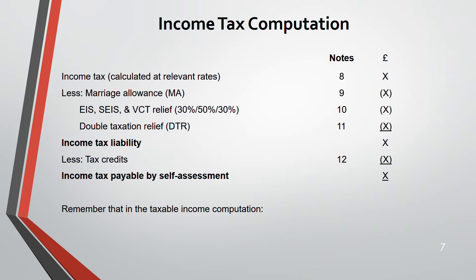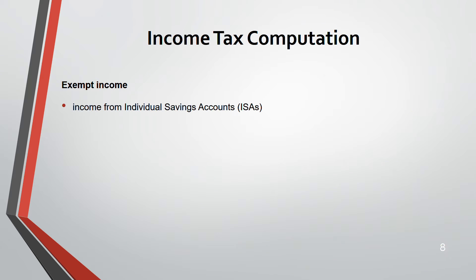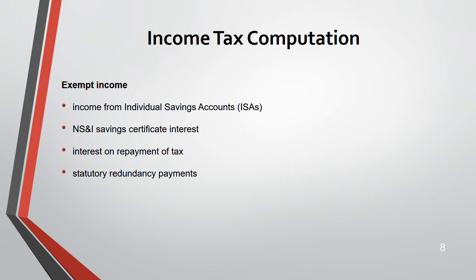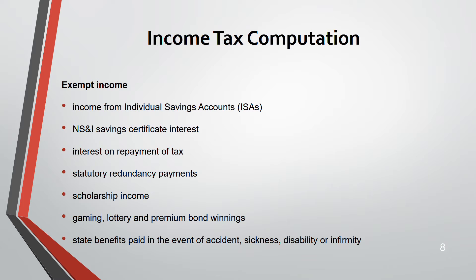In your taxable income, all incomes are gross. Exempt income is excluded: ISA income, National Savings interest certificate interest, NSIA savings interest, interest on repayment of tax, statutory redundancy payments, scholarship income, and gaming, lottery, or premium bond winnings. State benefits paid due to accident, sickness, or disability are also exempt.